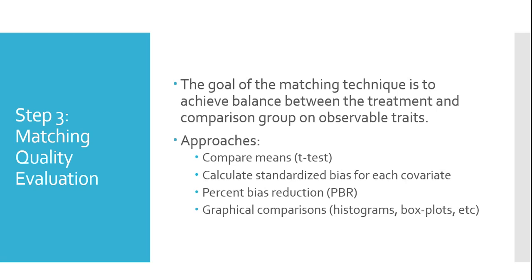Once we've done our matching, we evaluate the quality of the match, and this is sort of a junction point. If we have a good match, we can go ahead and estimate the treatment. If we don't have a good match, we may want to return and try a different matching strategy or a different set of observable covariates. The goal of matching is to achieve what we call balance between the two groups — we want the treatment and comparison group to look the same on observables beforehand. We can evaluate the quality of the match with several approaches: comparing means using a t-test to see if differences are statistically significant, calculating measures like standardized bias or percent bias reduction, or looking at graphical comparisons such as box plots and histograms of the distribution.